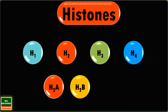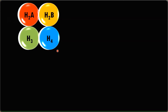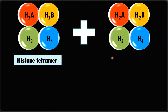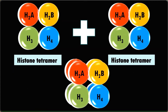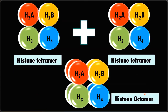Histone proteins are broadly divided into four types: H1, H2, H3, and H4. H2 is further divided into H2A and H2B. So in total we have five types of histone proteins: H1, H2A, H2B, H3, and H4. In a stepwise manner, these histone proteins help in DNA packaging. Two histone tetramers come together to form a histone octamer — octa means eight — consisting of two units each of H2A, H2B, H3, and H4.